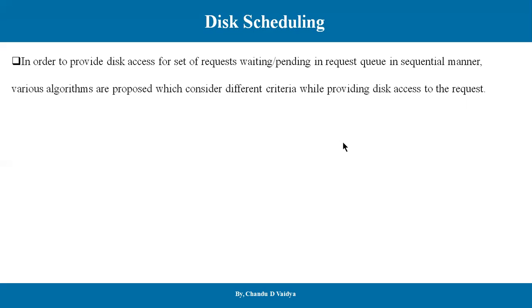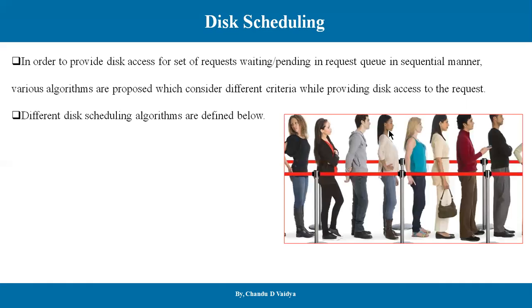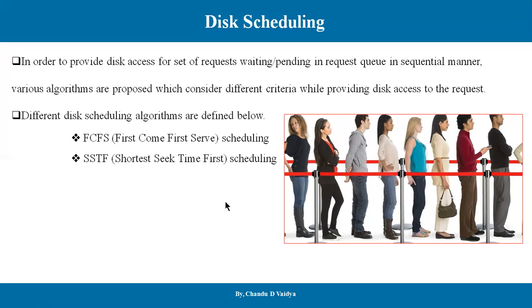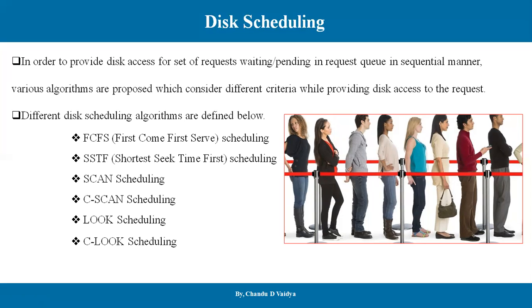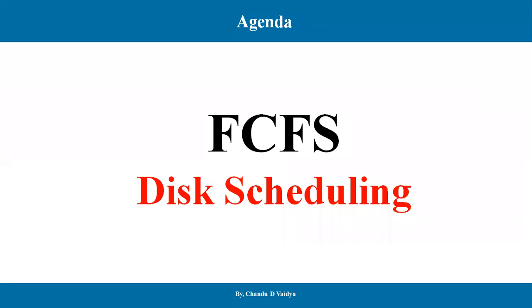This means that on a disk, on a track, on a sector, there are some requests that come — from some user, some OS — and these are stored in a pending queue waiting for service. The first algorithm is First Come First Serve. The second algorithm is Shortest Seek Time First. So let's talk about the First-Come-First-Serve scheduling.